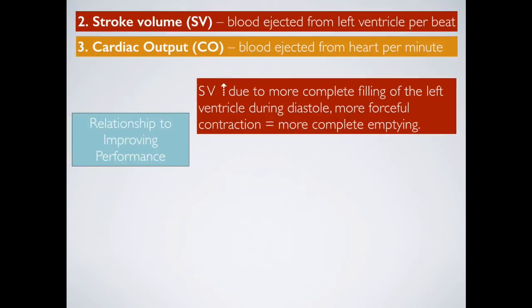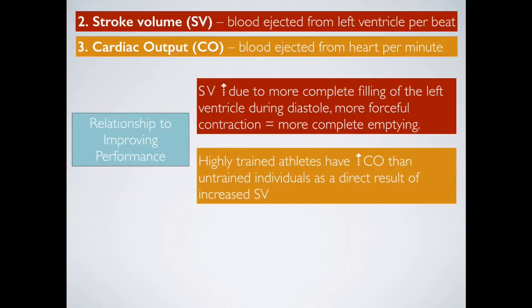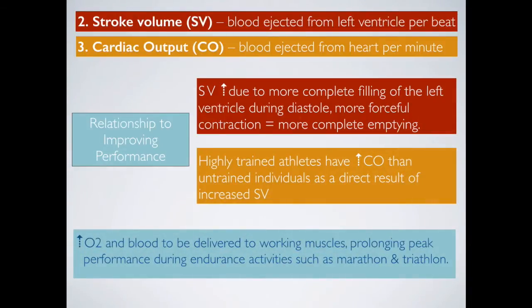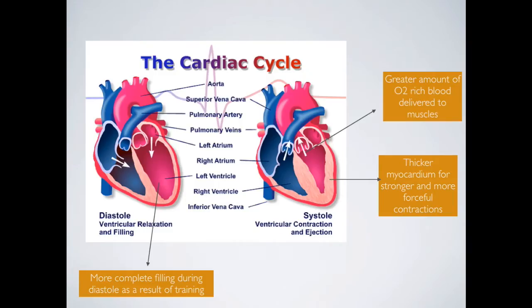Stroke volume increases as a result of training due to more complete filling of the left ventricle during diastole, more forceful contraction, and more complete emptying of the ventricle. All of the blood that fills the ventricle is pushed out efficiently to body tissues. With regard to cardiac output, it is fairly similar between trained and untrained athletes at rest, but when training at maximal levels, the cardiac output of a trained athlete is much higher, allowing more blood to be delivered to working muscles and prolonging peak performance.